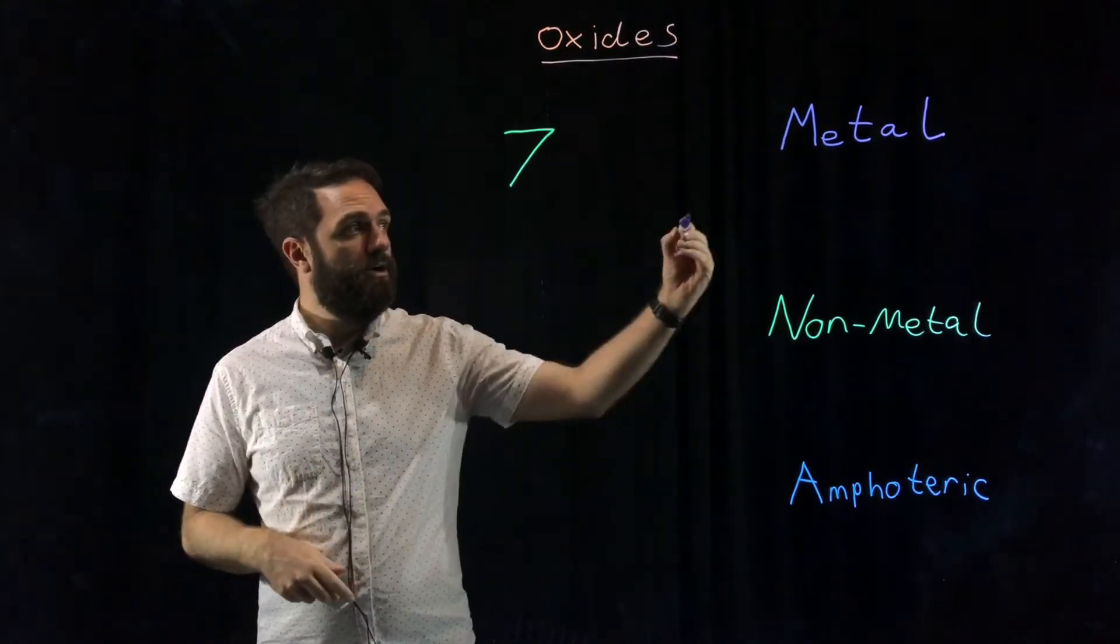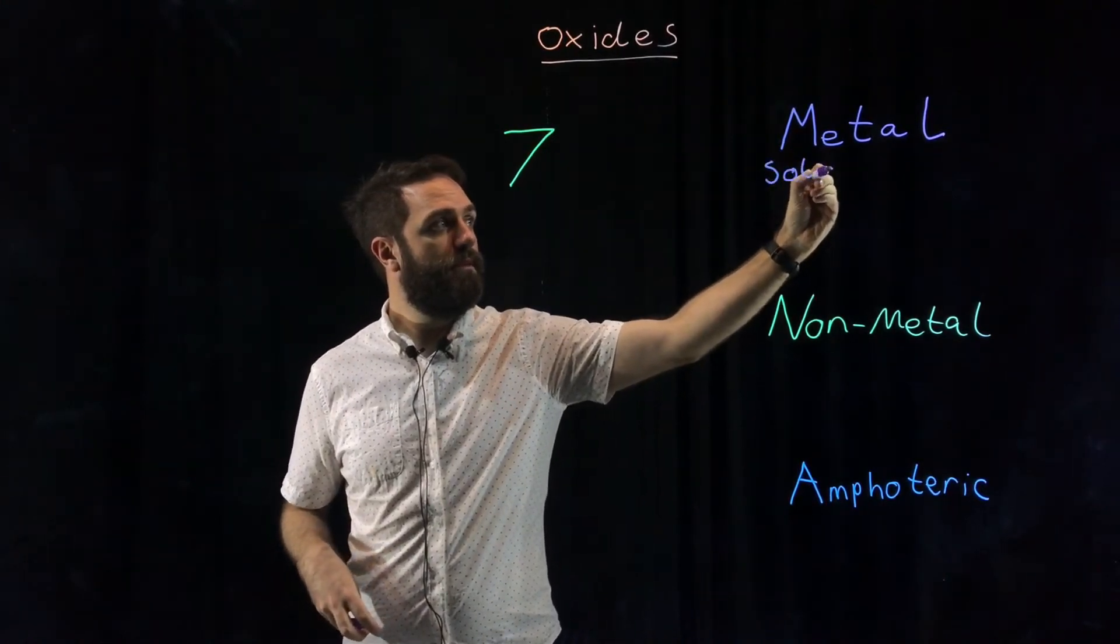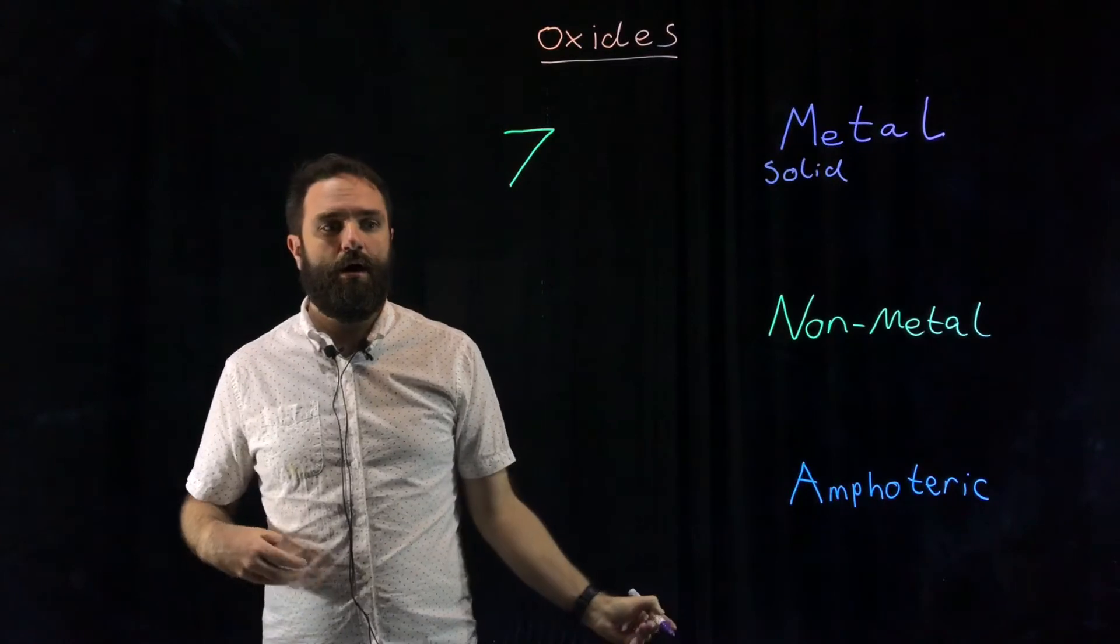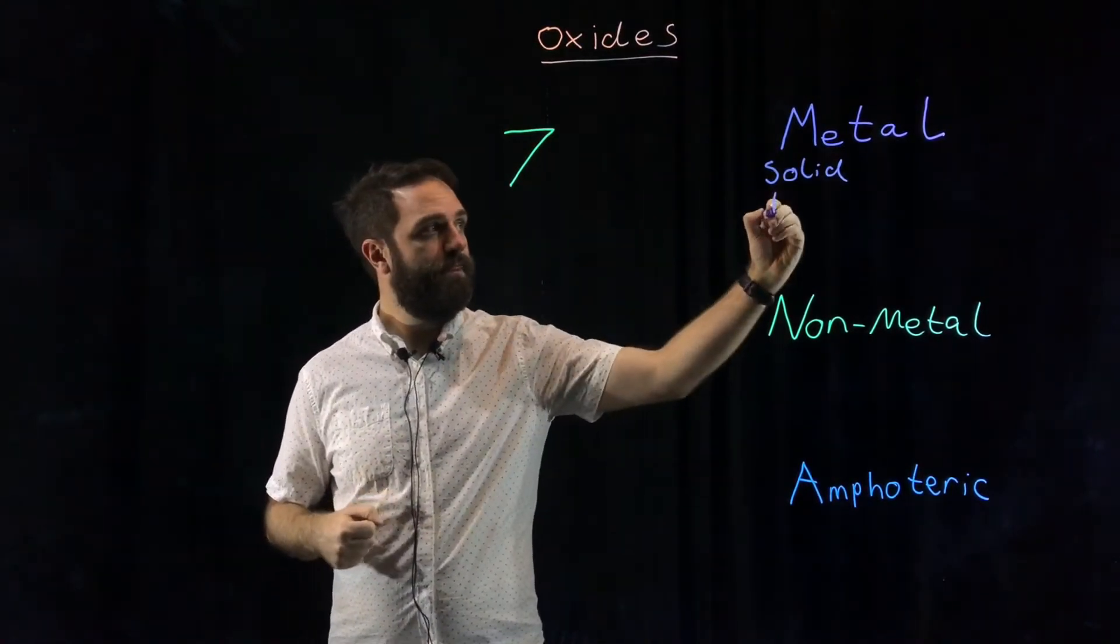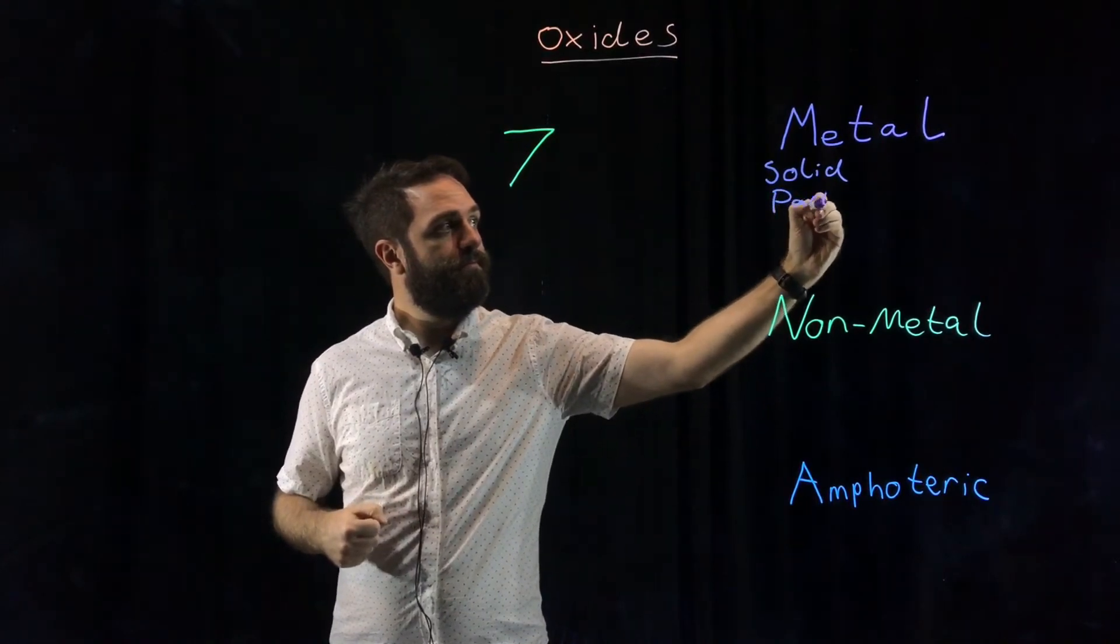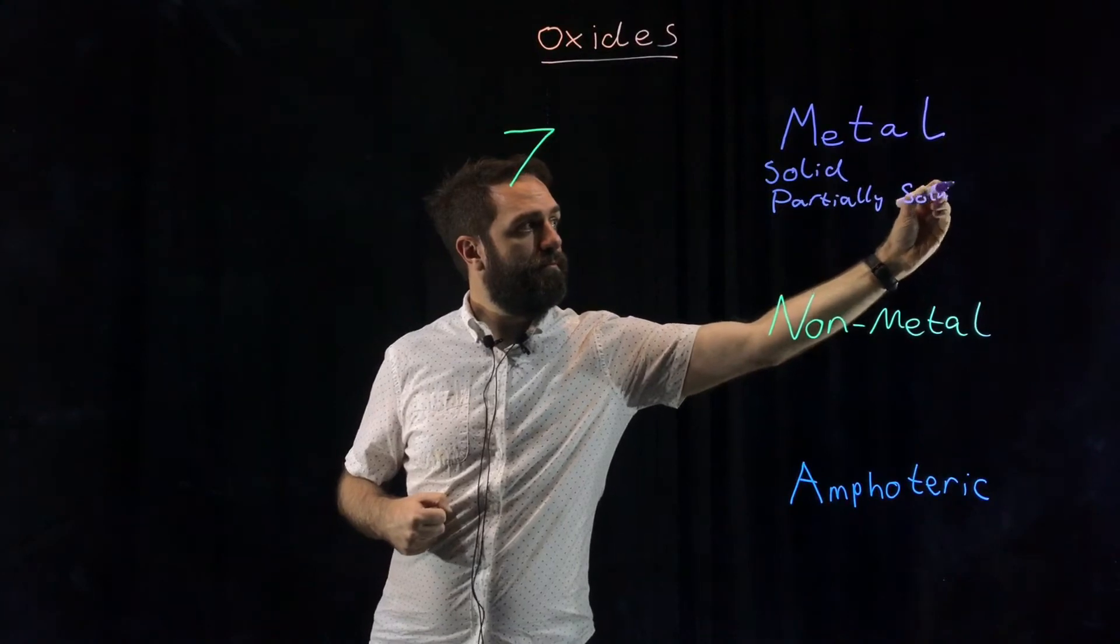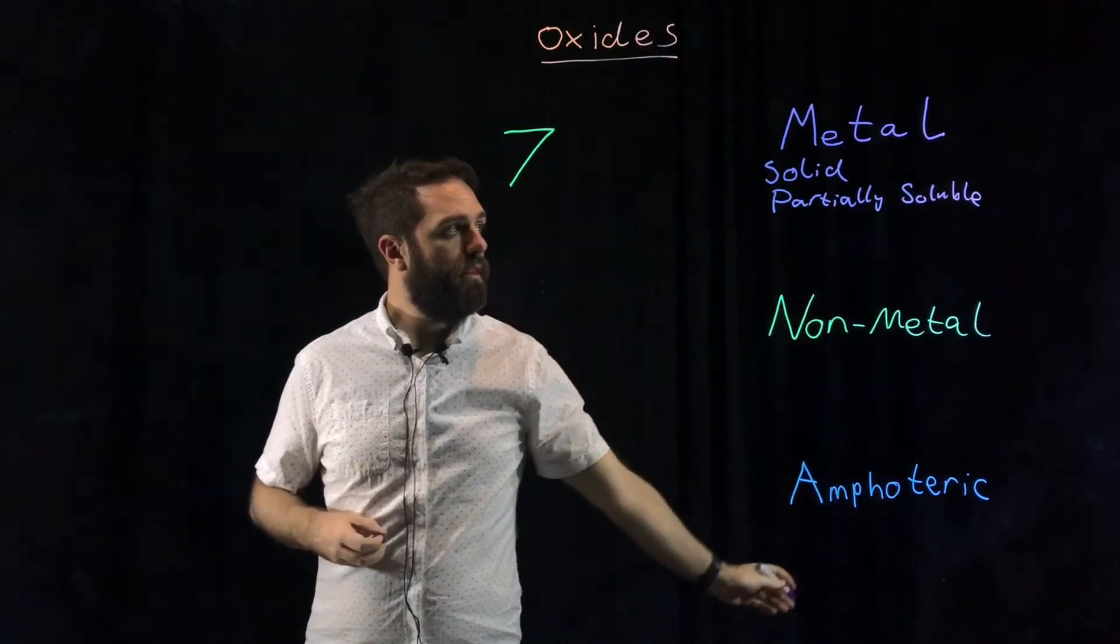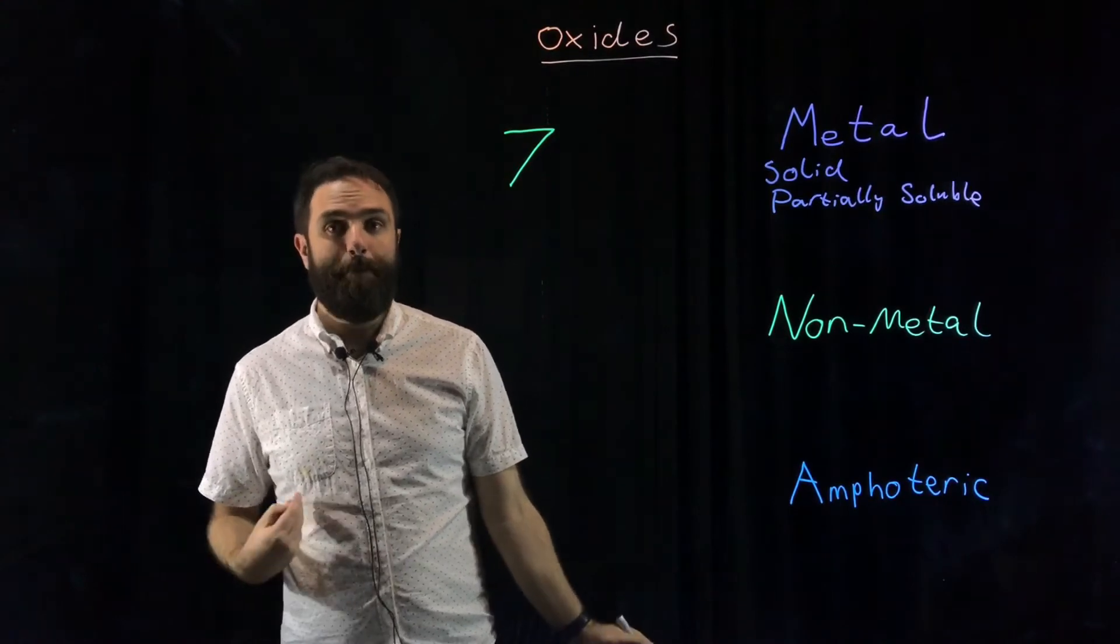Metal oxides are solids at room temperature. They are only partially soluble, not really very soluble at all, but a little bit will dissolve. And if you do dissolve them in water, they are bases.